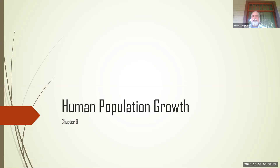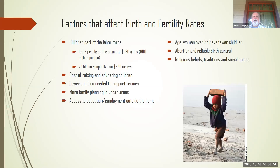This is the third video and we're going to talk a little bit more about human population growth. In this one we're going to look at factors that affect birth rate, death rate, and things like that — so factors that affect birth and fertility rates.